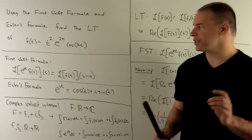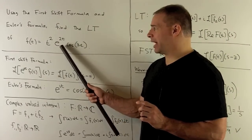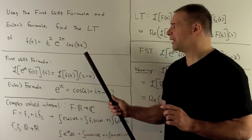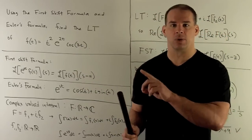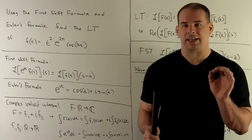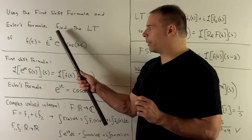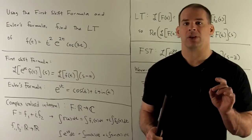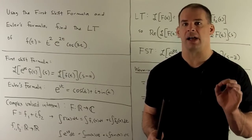We're talking about functions like t to a power, exponentials to a number times t, and cosine and sine of a number times t, and then products of those. Except for the t to a power, the rest fall under the first shift rule. The only catch is that we're going to need complex analysis.